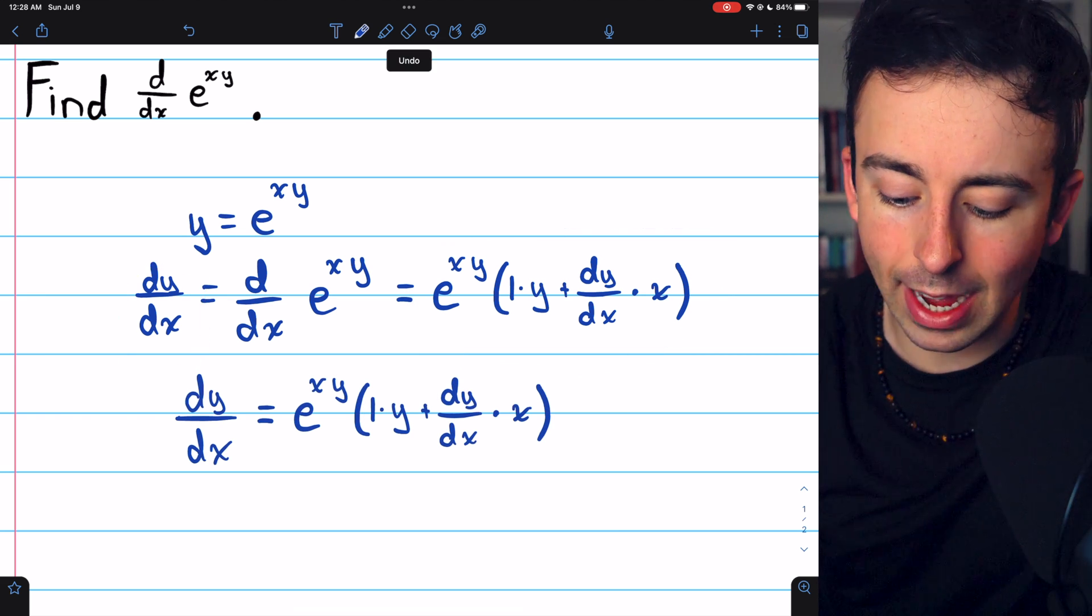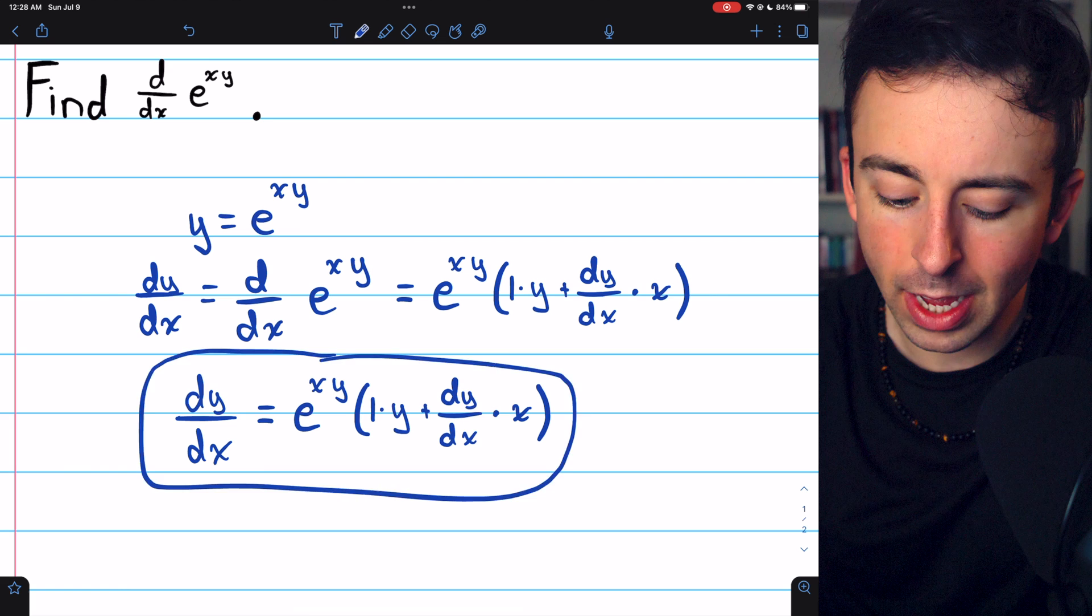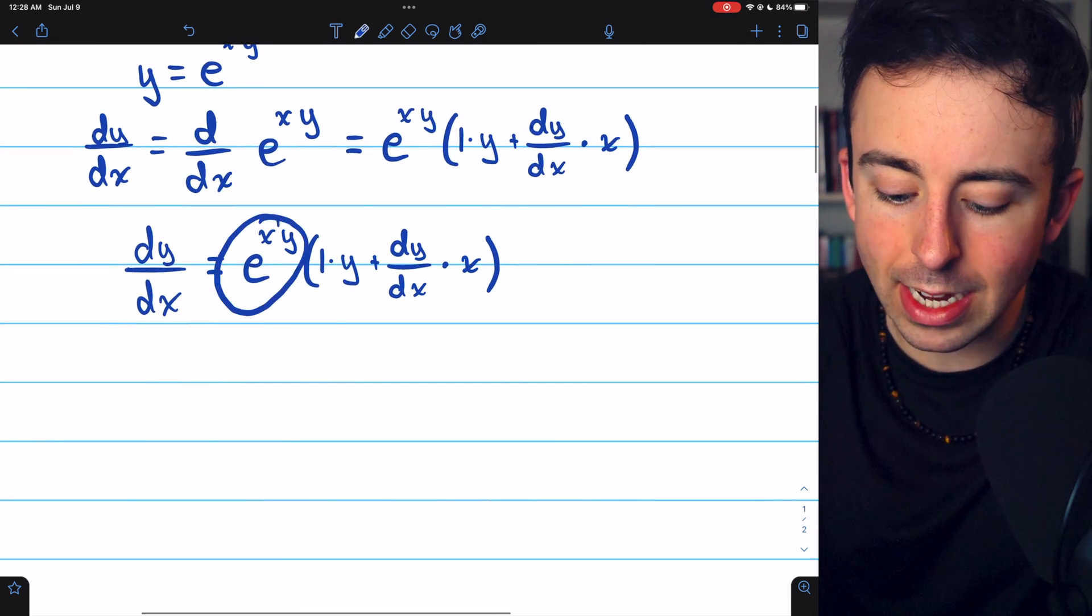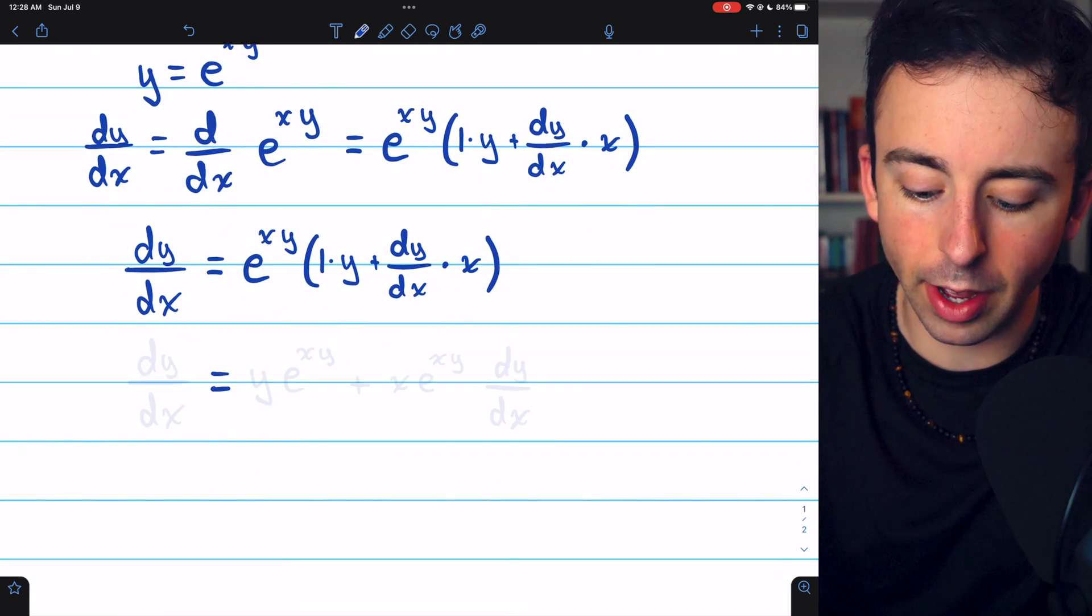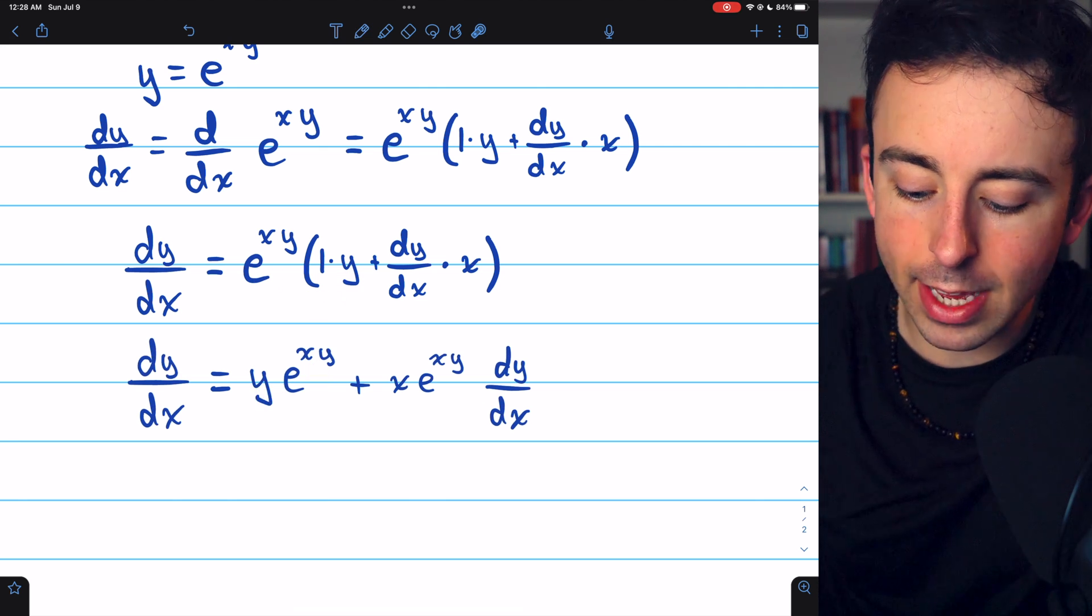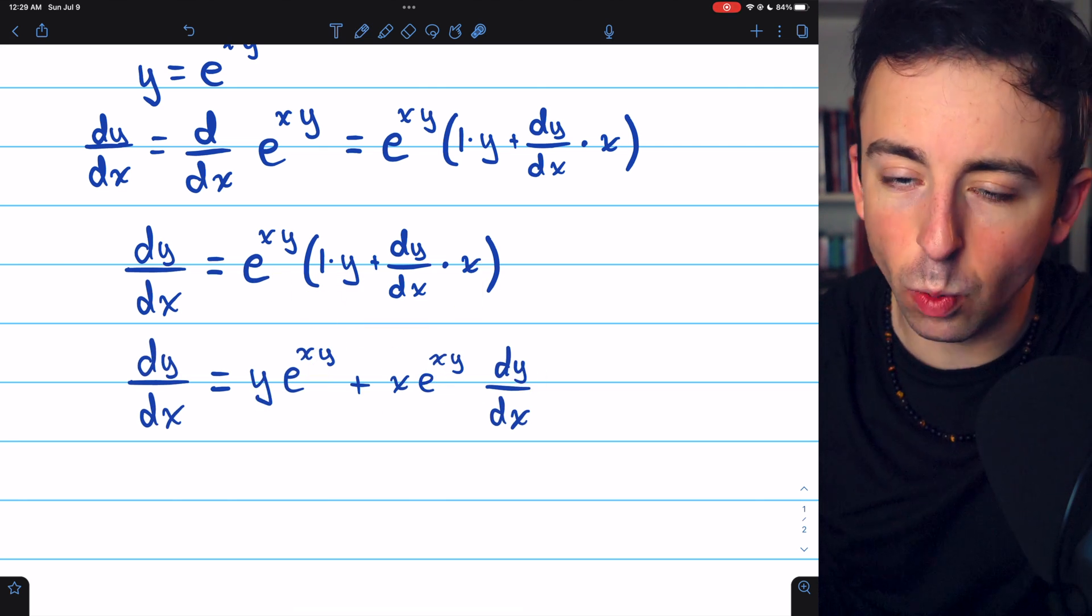So now we have dy dx equals this expression on the right, which I've written here. Let's go ahead and distribute the e to the xy through these parentheses. That's going to give us y times e to the xy plus x e to the xy dy dx.